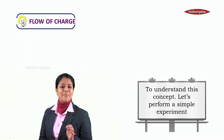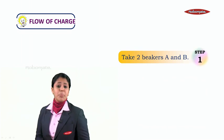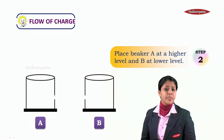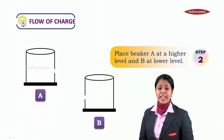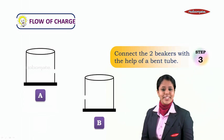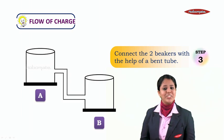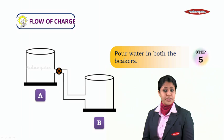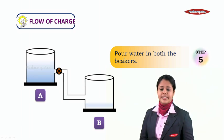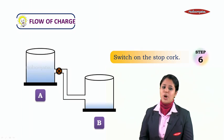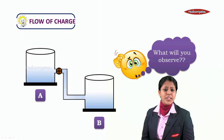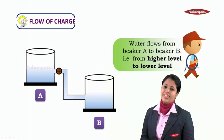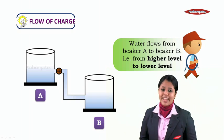To understand this concept, let's perform a simple experiment. Take two beakers: beaker A and beaker B. Place beaker A at a higher level and beaker B at a lower level. Connect the two beakers with a bent tube and place a stopcock to control the flow of water. Pour water in both beakers, then switch on the stopcock. What will you observe? Water flows from beaker A to beaker B — that is, from higher level to lower level.